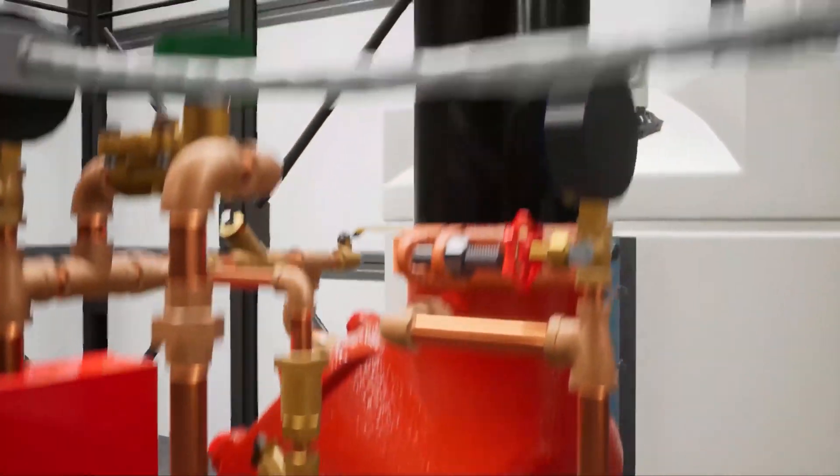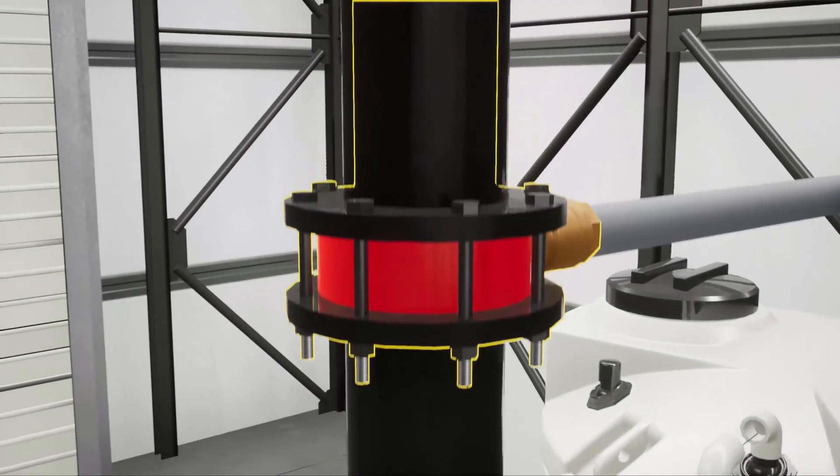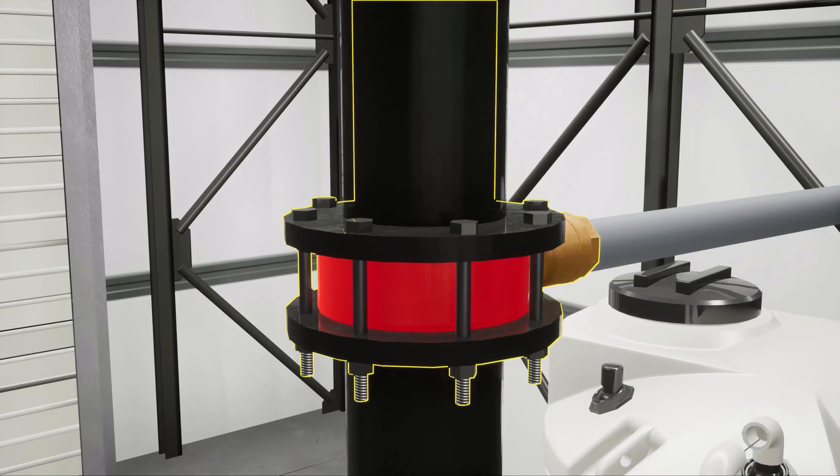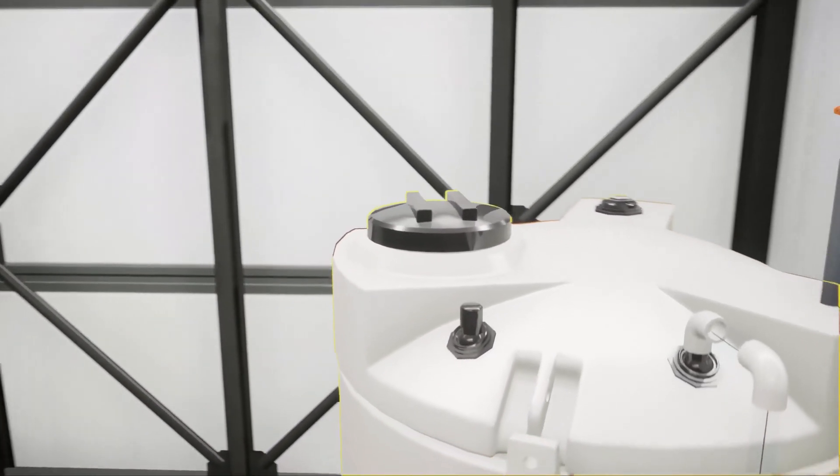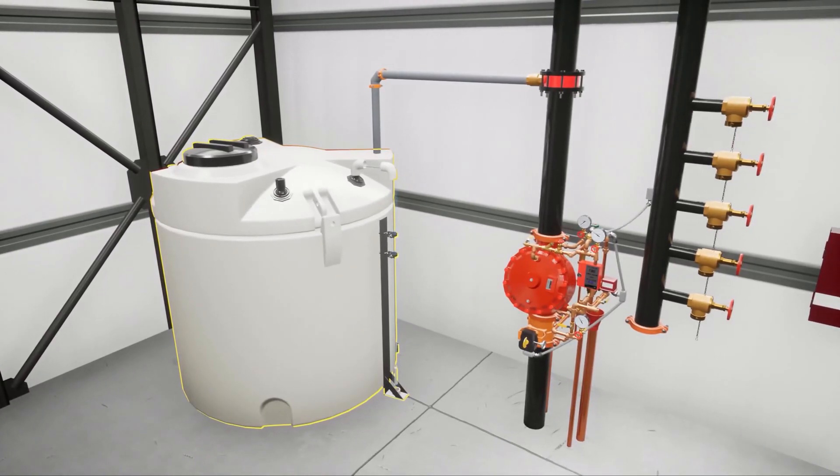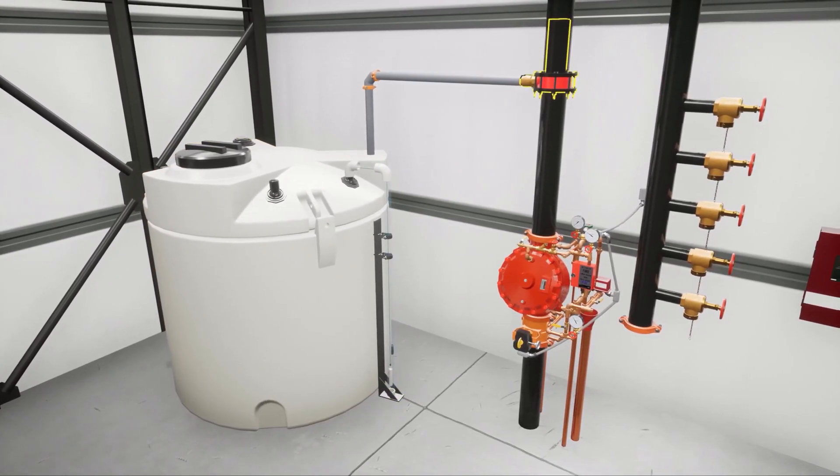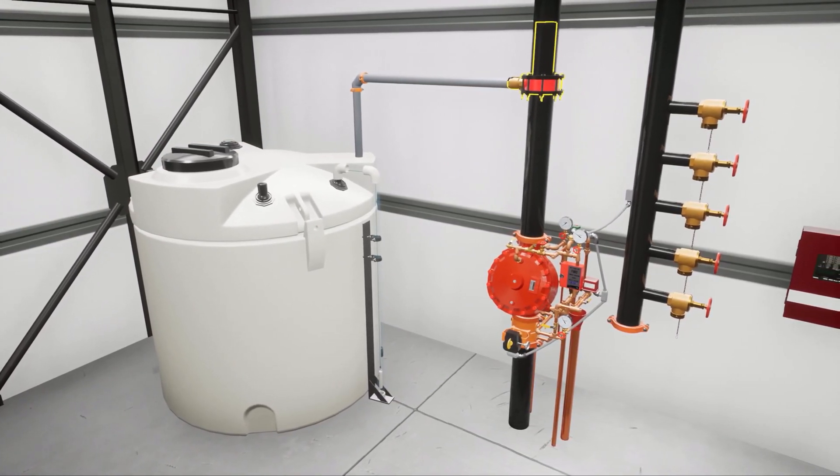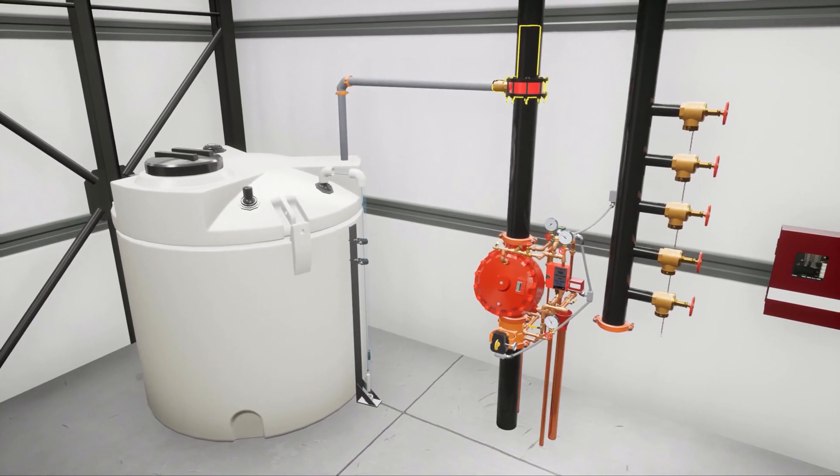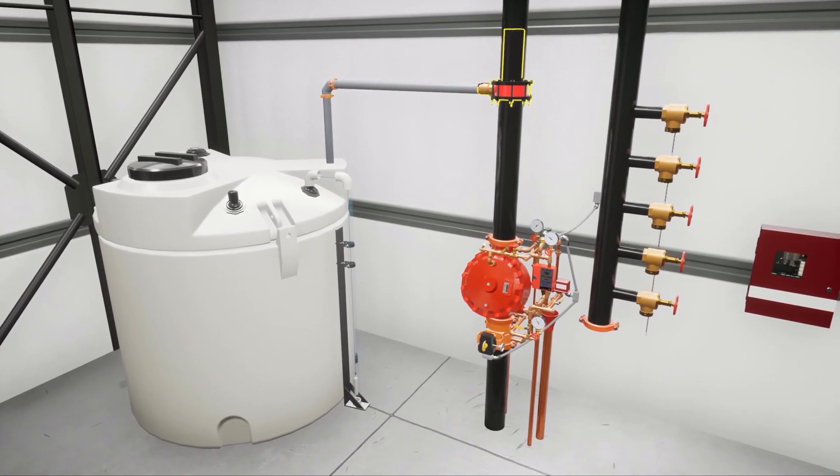The proportioning method required by the Unified Facilities Code is an inductor. The inductor draws foam concentrate from an atmospheric storage tank. The inductor is a strong Venturi device. Water velocity through the device creates a vacuum on the foam inlet of the device.